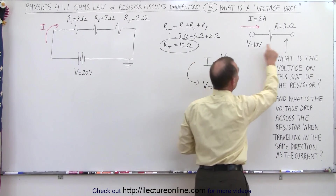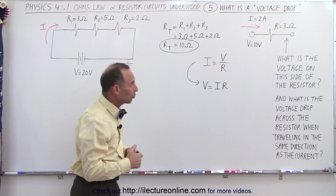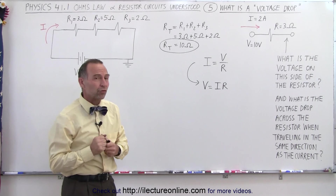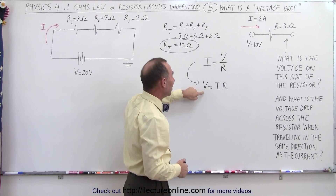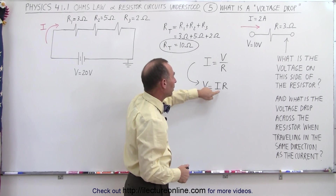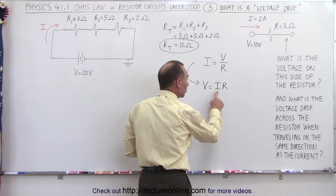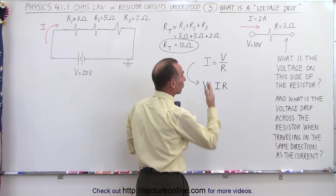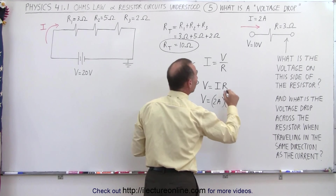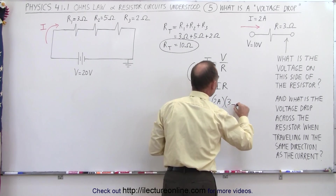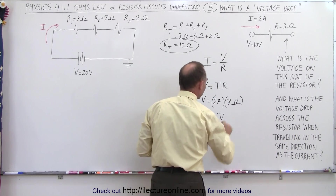When traveling from left to right — the direction of the current — we expect the voltage drop to exist across that resistor. Using Ohm's Law, V equals I times R, meaning the voltage across the resistor is the current through it times the resistance. In this case, the voltage drop equals 2 amps times 3 ohms, and since amps times ohms equals volts, the voltage drop is 6 volts.